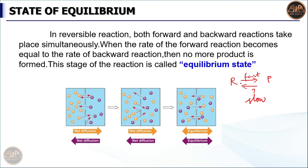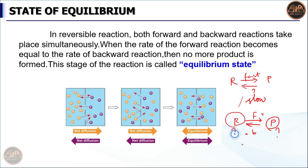In the setting stage, the forward and backward reaction rates of reaction become equal. In that state, no more products are formed and no more reactants are consumed. Both products and reactants are present. When this happens, the state is called the equilibrium state.